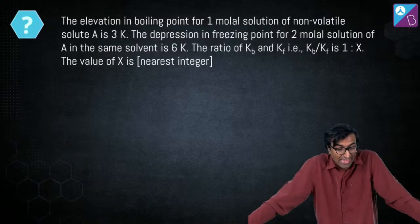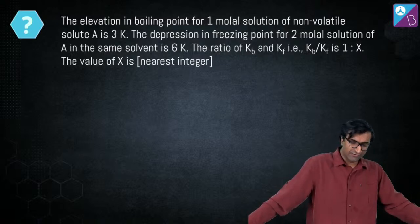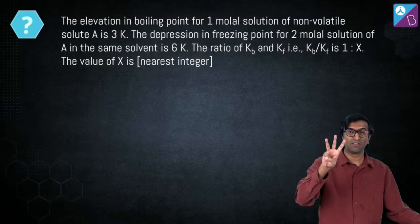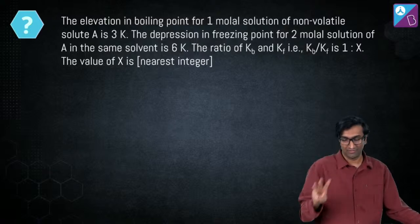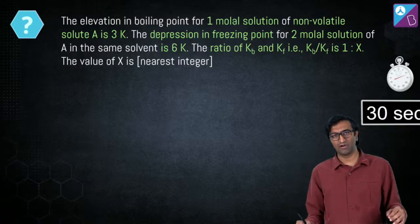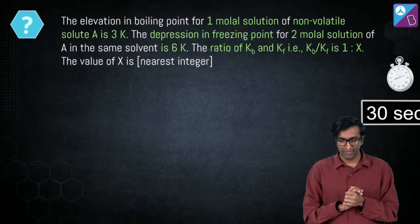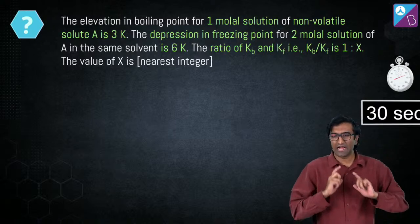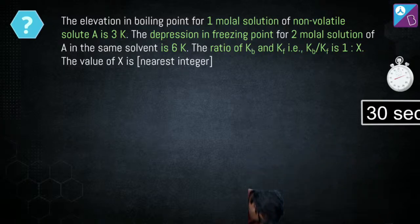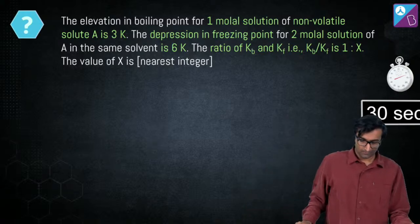Question six: The elevation of boiling point for a 1 molal solution of non-volatile solute A is 3 K. The depression in freezing point for a 2 molal solution of A in the same solvent is 6 K. Find the ratio Kb/Kf. I've seen at least three similar questions in recent JEE papers. Target: solve in 30 seconds.